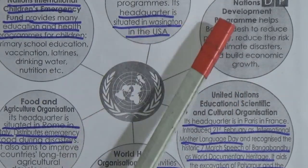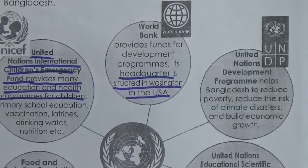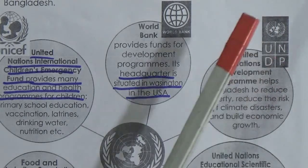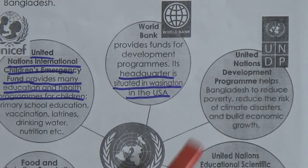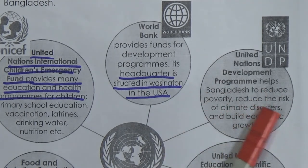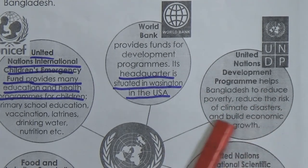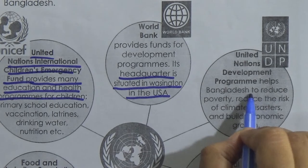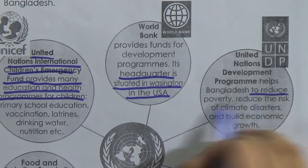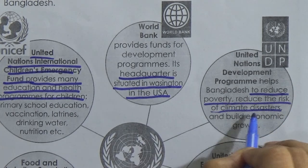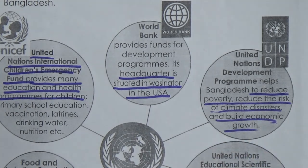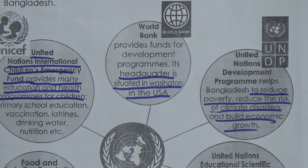UNDP stands for United Nations Development Programme. UNDP helps Bangladesh to reduce poverty, reduce the risk of climate disasters, and build economic growth. These are the six development organizations through which the United Nations carries out its developmental work.